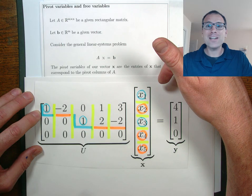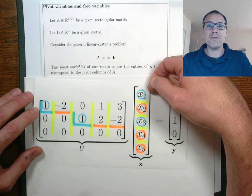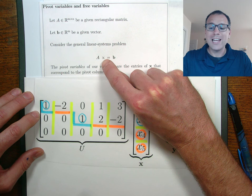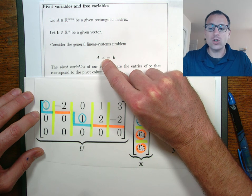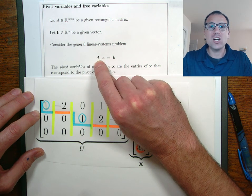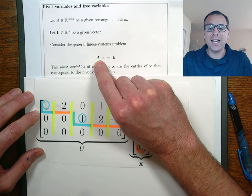That very simple observation leads to some definitions that we'll use to discuss the individual entries of the vector x with respect to the structure of the matrix a.